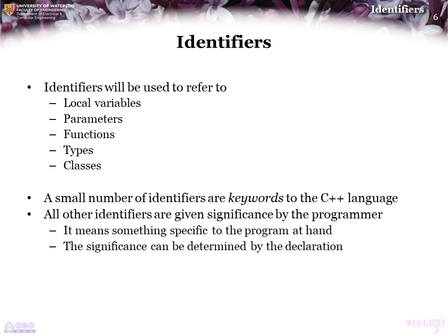The significance of an identifier can be determined by looking at the declaration. Every single identifier you begin using must first have a declaration. The declaration is the first time the identifier is seen in your program. We've already seen that — first we had a function declaration, and once we had that, we saw the function definition.